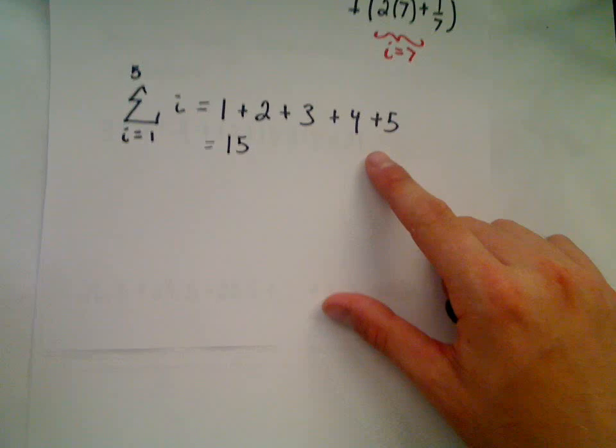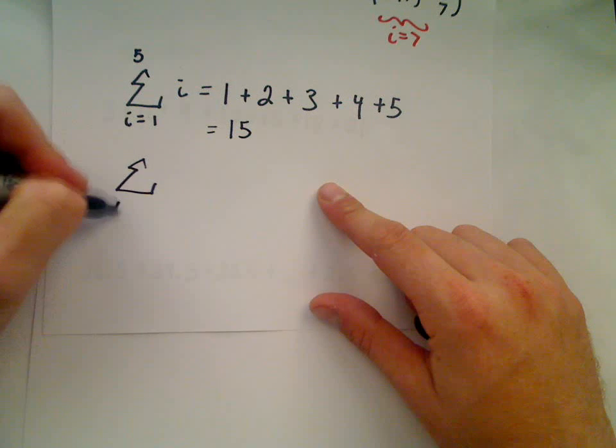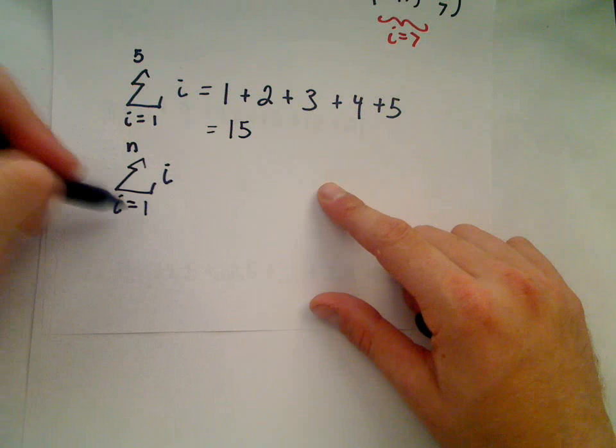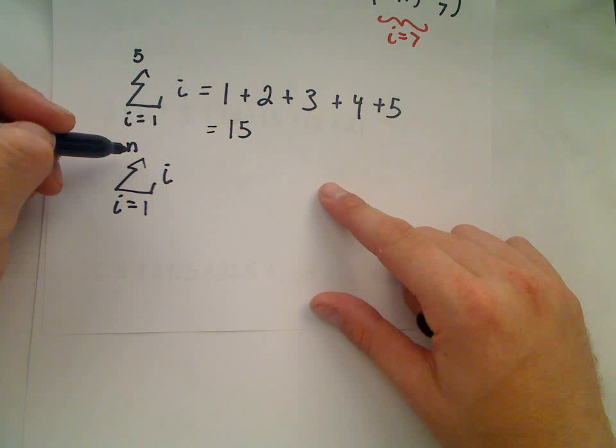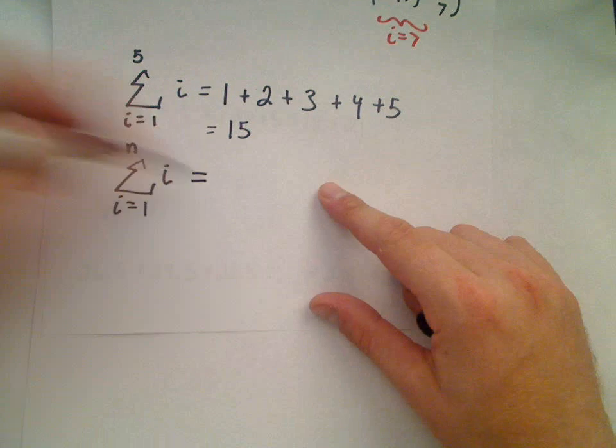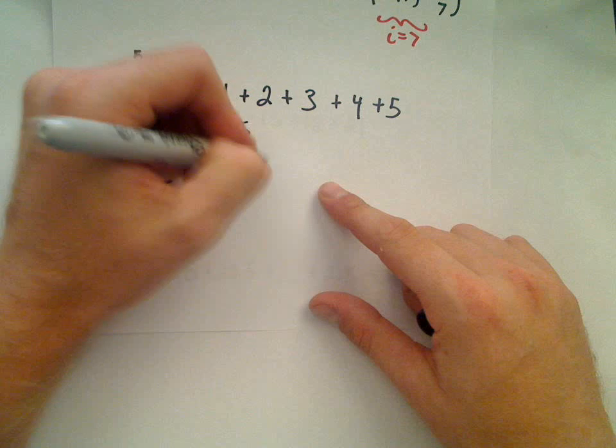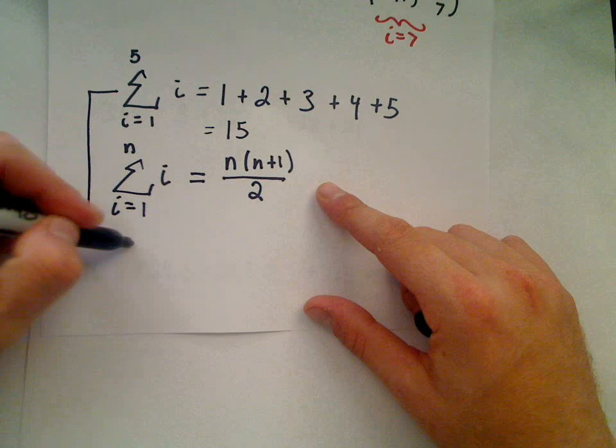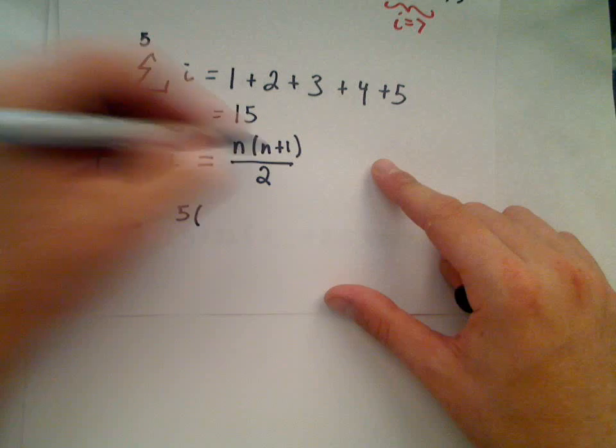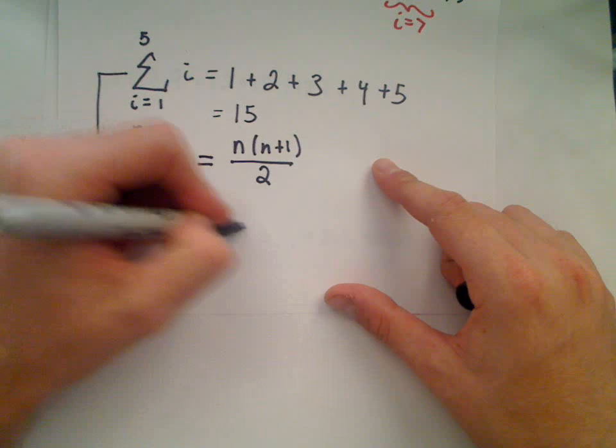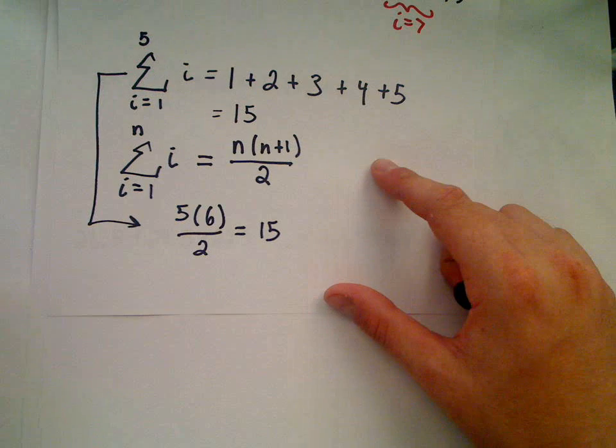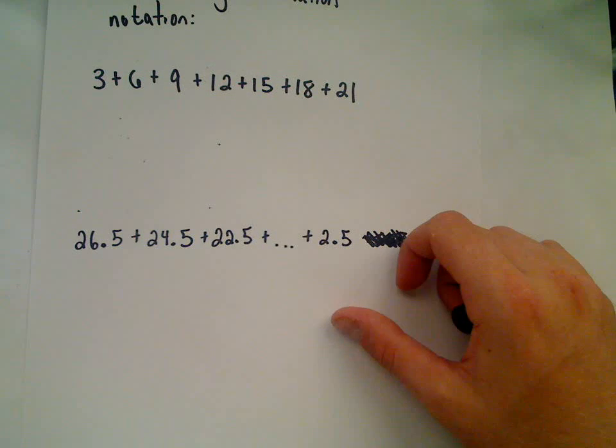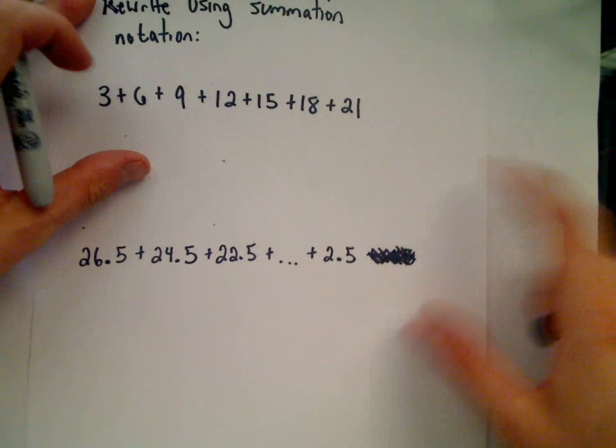The only reason why I'm putting this seemingly easy example up here is there's a little formula that's sometimes useful to know. If you sum up from i equals 1 to n of just i, you're summing up the first n whole numbers - 1 plus 2 plus 3 plus 4 plus 5, etc. A shorthand formula for this is you take the top number n, multiply that by n plus 1, and divide it by 2. So notice in our example, according to this formula, you would get 5 times 6 over 2, and in fact we do get the number 15 out.